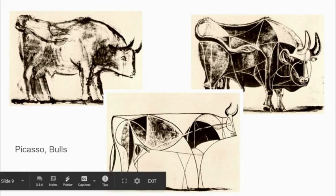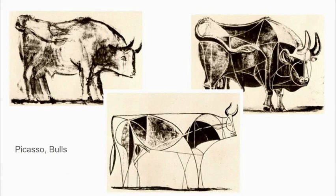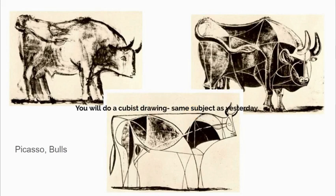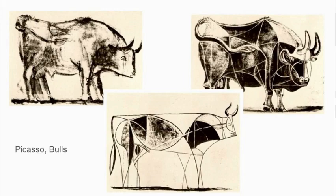This is an example of what you guys are doing. You just did a realistic cartoon — this bull is more realistic than cartoon. His series is about ten bulls; I cut some of them out. What you're going to do next is a cubist self-portrait. You could break it up into shapes, show different views at the same time, or show movement. How could we show movement on this bull?